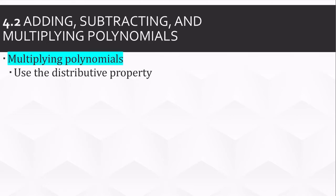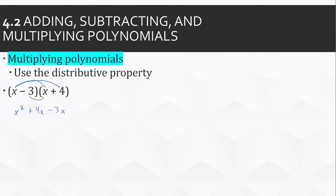Multiplying polynomials. To multiply polynomials, use the distributive property. For example, we take everything on the left and multiply with everything on the right: x times x, x times 4, negative 3 times x, and negative 3 times 4. Notice those have the same power in x, so I can combine them — they're like terms. So 4x minus 3x: 4 minus 3 is 1x.